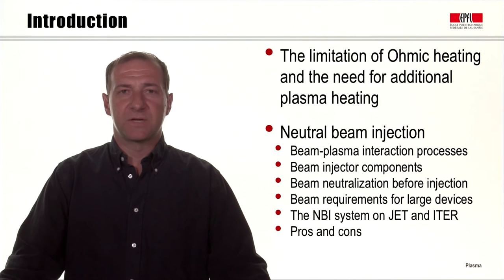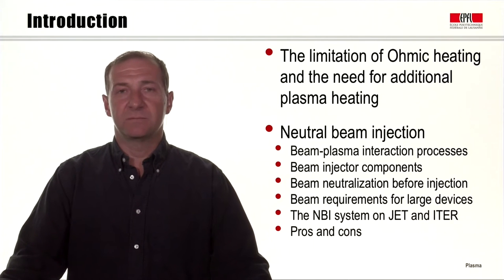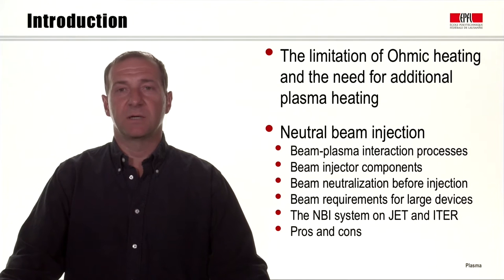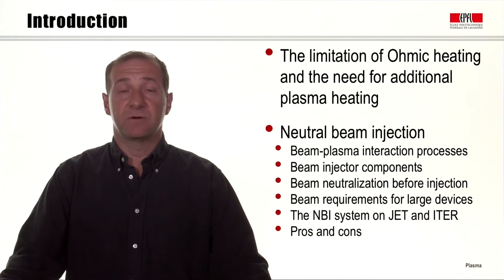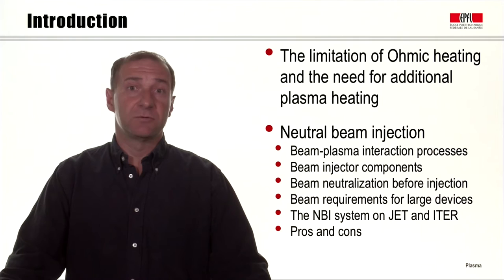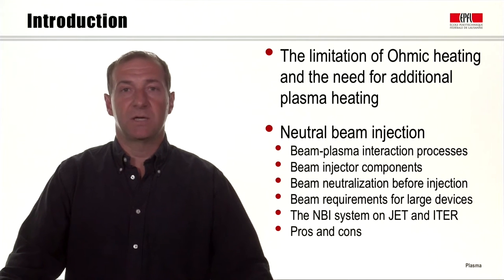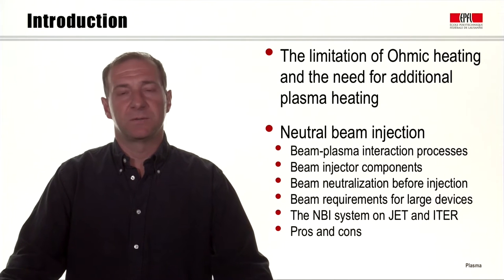We will start by discussing ohmic heating, that is the heating of the plasma by an electrical current, and the limitations of that method. Therefore we will illustrate the need for additional plasma heating, meaning in addition to the ohmic heating method.